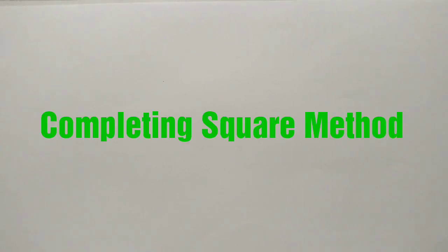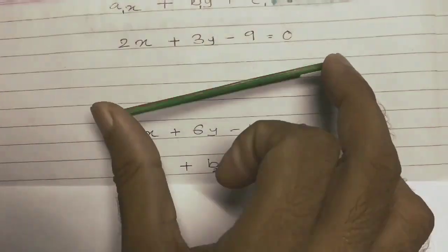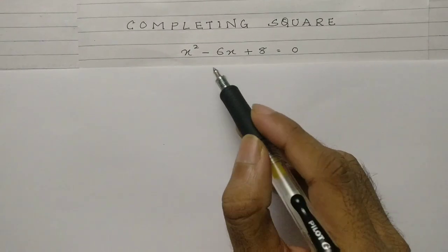Hey there, Joel here and welcome to my channel Math World. Today we are going to learn the third method of solving a quadratic equation, and that is the completing the square method. I have an equation over here: x squared minus 6x plus 8 equals zero.